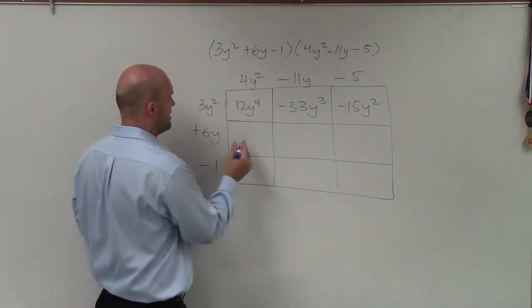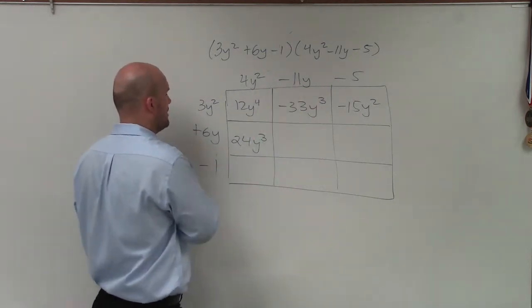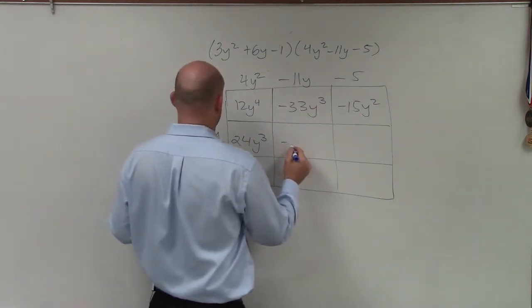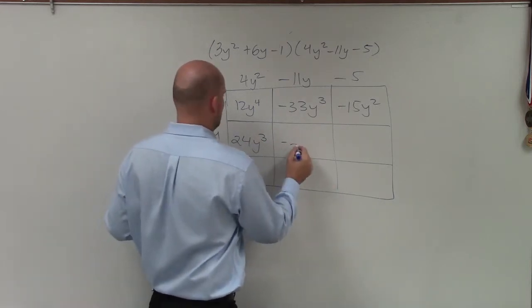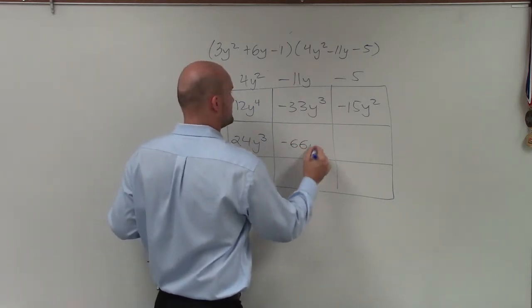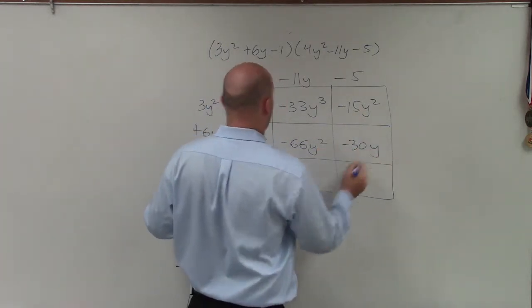4y² times 6y is going to be 24y³. -11y times 6y is -66y². And -5 times positive 6 is -30y.